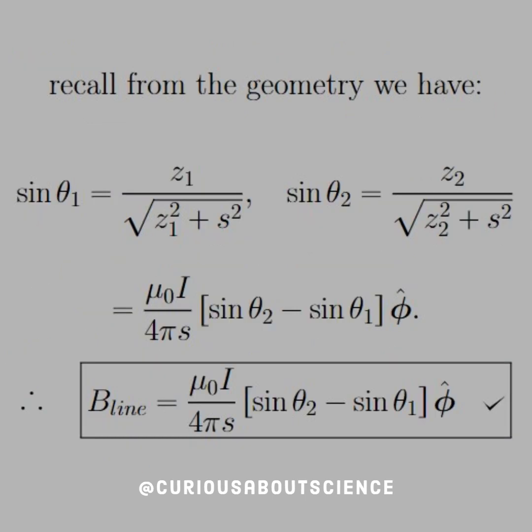This looks familiar, but let's write this in terms of what our geometry gives us. If you remember from our geometry, we had a triangle, and we know that the sine of theta equals opposite over hypotenuse, so we can put z1 over script r, and then z2 over script r for theta 1 and theta 2.